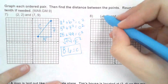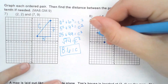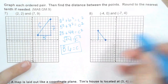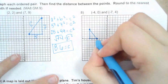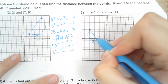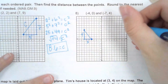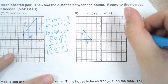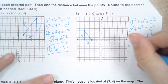Doing the same process for the next pair: (−4, 0) and (−7, 4). Again, you cannot count the diagonal — you have to create a right triangle, find the leg distances, and use the Pythagorean theorem to find the hypotenuse. The bottom leg is 3 and the side leg is 4. So 3² + 4² = c². 3² = 9, 4² = 16. Adding 9 and 16 gives 25. The square root of 25 gives a hypotenuse of 5.